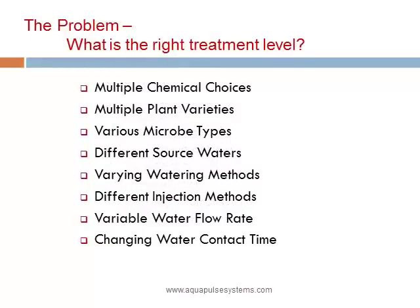So now we have a challenge. We have multiple sanitizer choices, a variety of plants, different microbes, many water sources and watering methods, and varying flow rates and contact times. So what is the appropriate chemical level? How much is sufficient to kill the pathogens, and for how long? ORP is presented here as a single value measurement of the effectiveness of water sanitation for all oxidizers, taking into account all of the above variables.